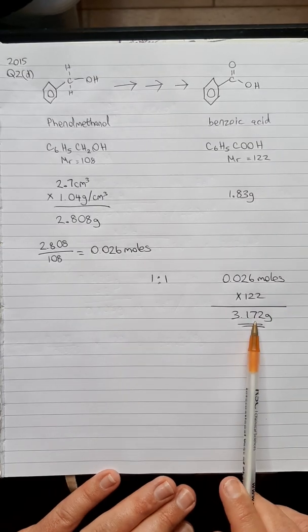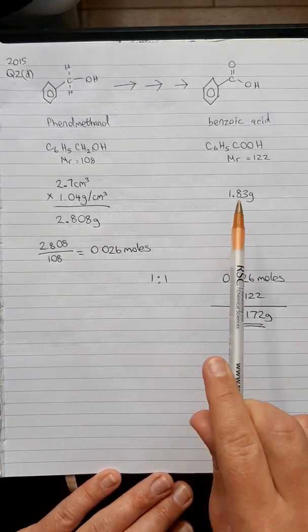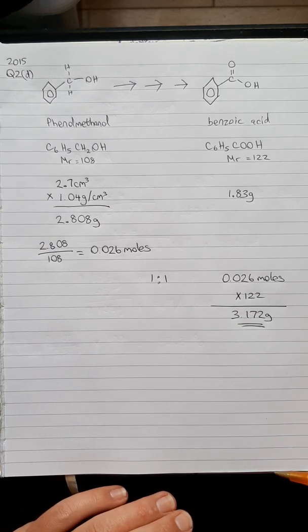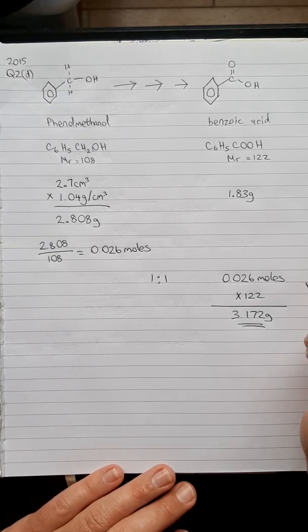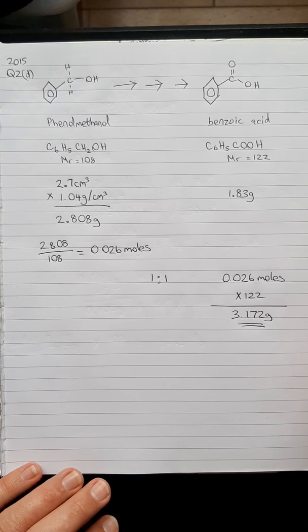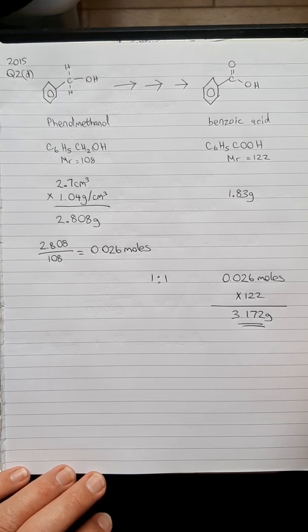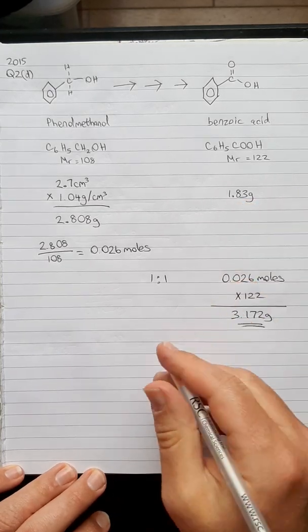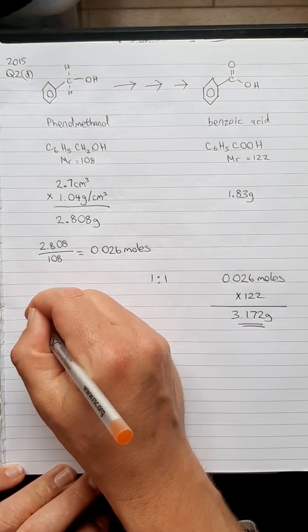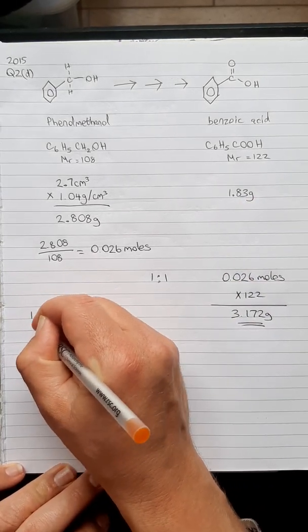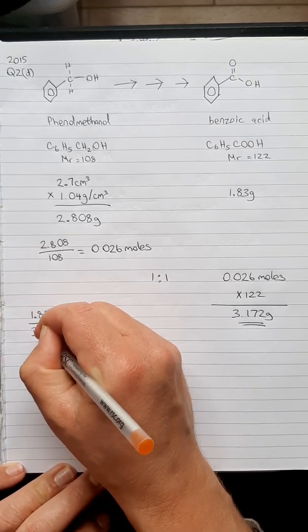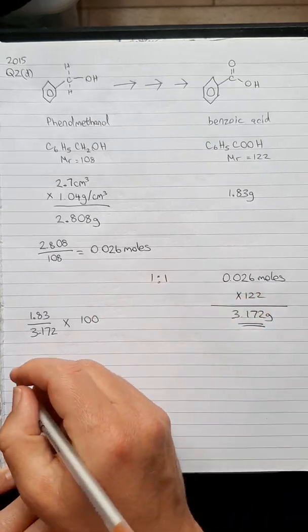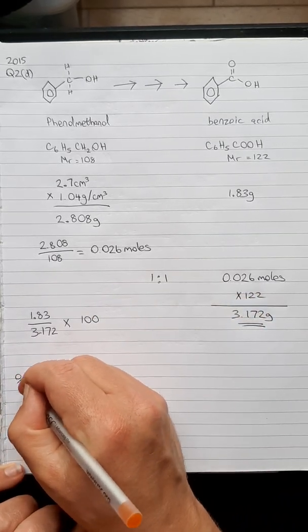In reality we only got 1.83 grams. You're never going to get more than 100%, but you're always going to lose something along the way. So we're going to put 1.83 over 3.172 and multiply by 100 because to get the percentage yield.